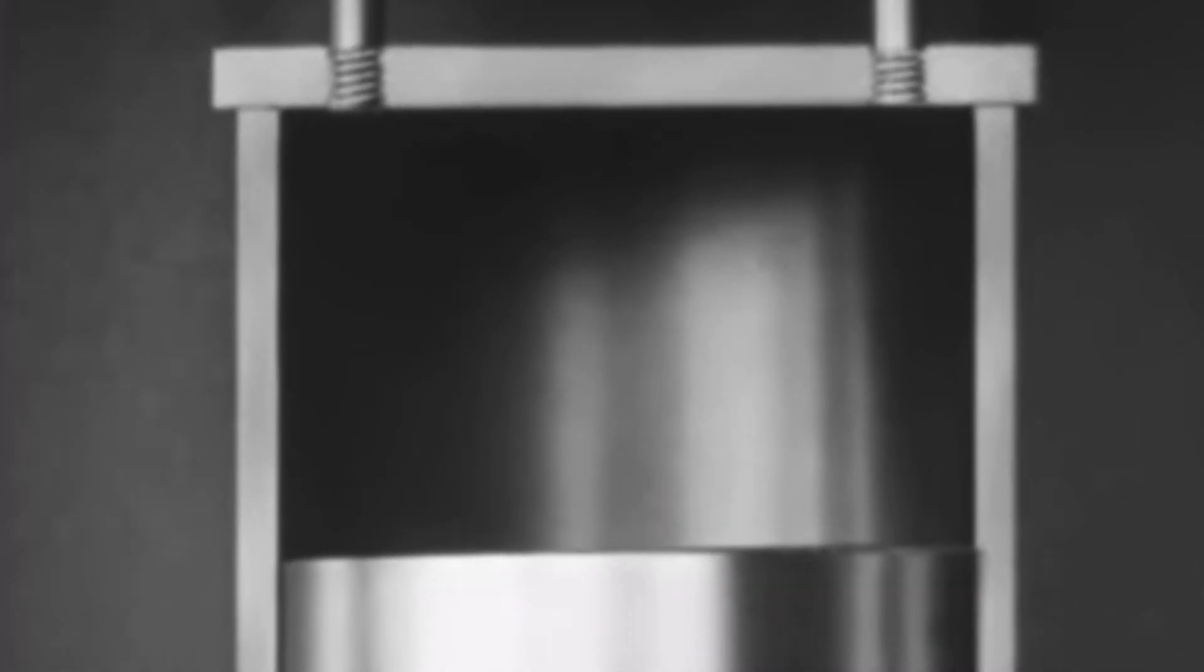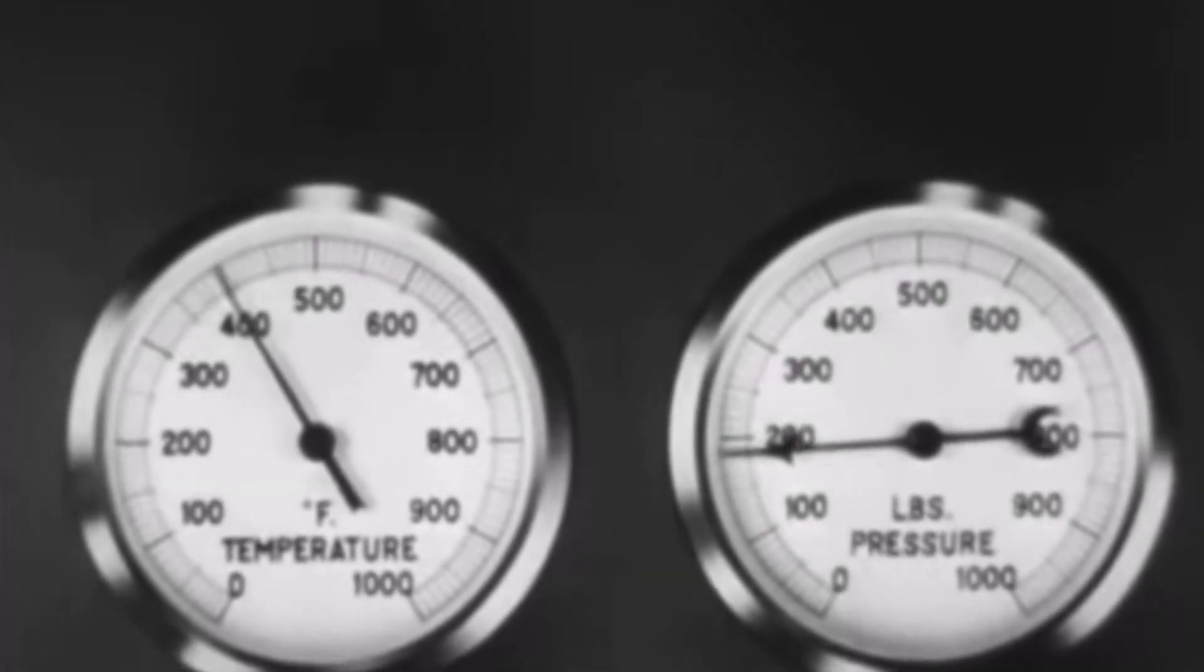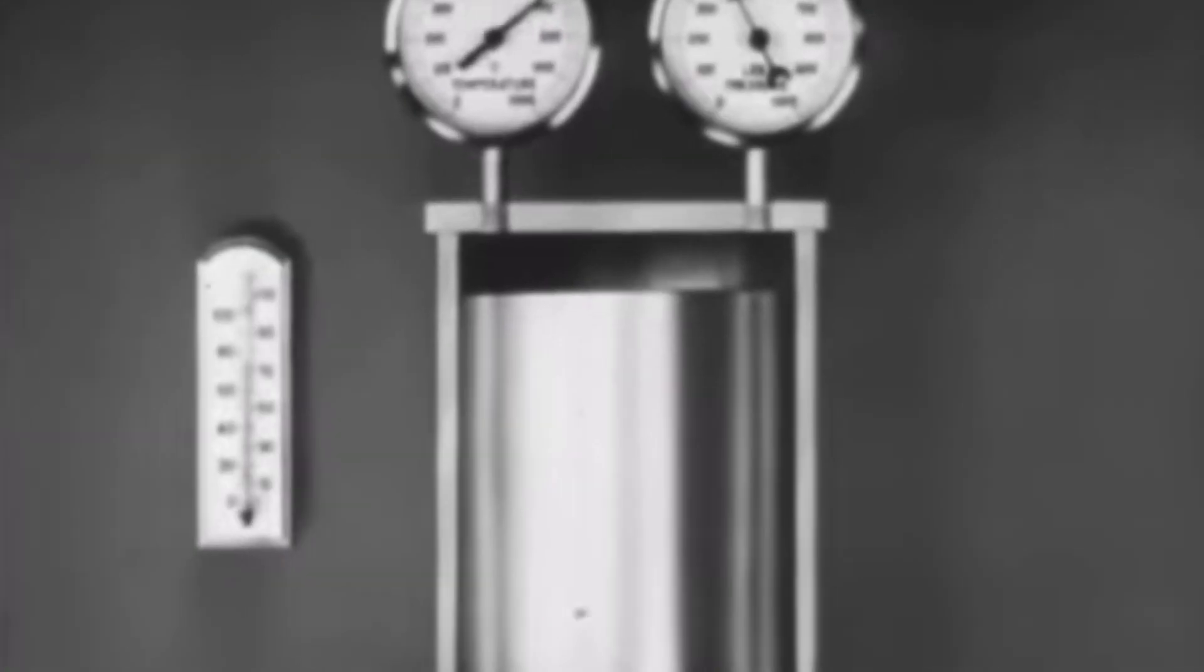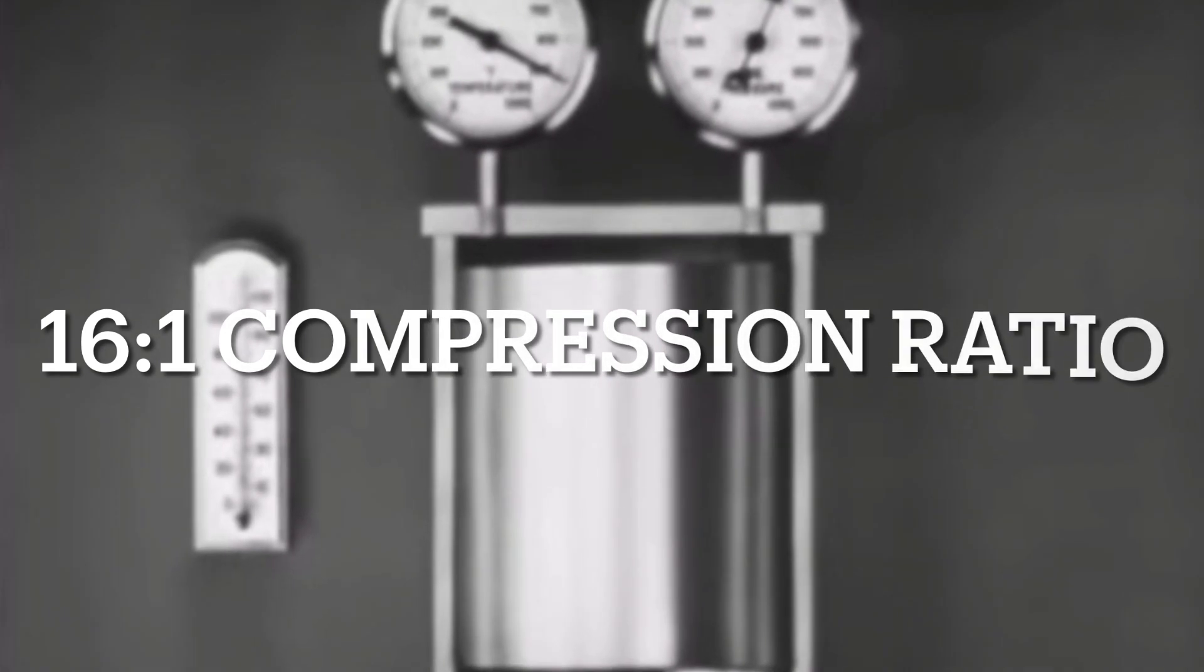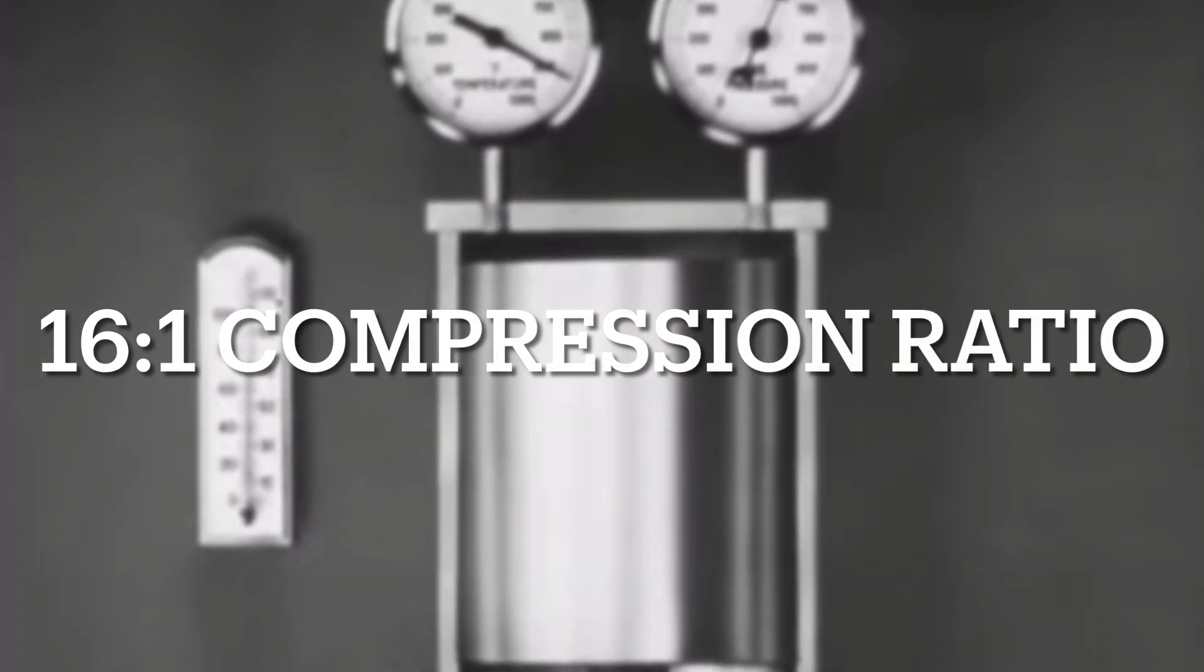Now the air in the cylinder is hot enough to boil water. Higher and higher go temperature and pressure. Now it's hot enough to melt tin, until finally the air is squeezed into about one-sixteenth of the space it occupied before we started compressing it.